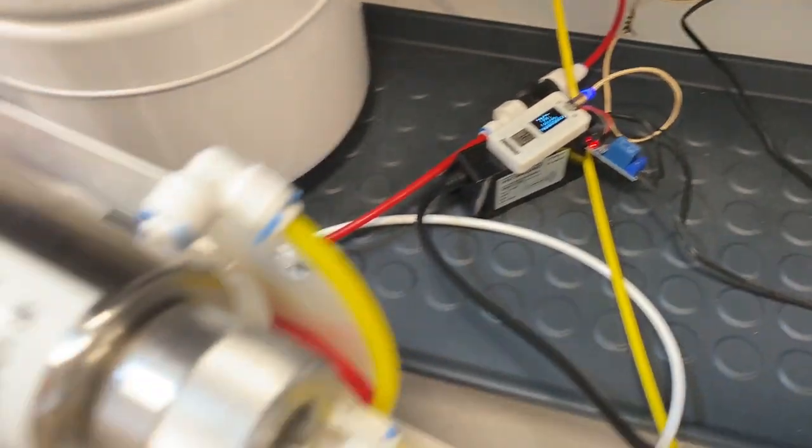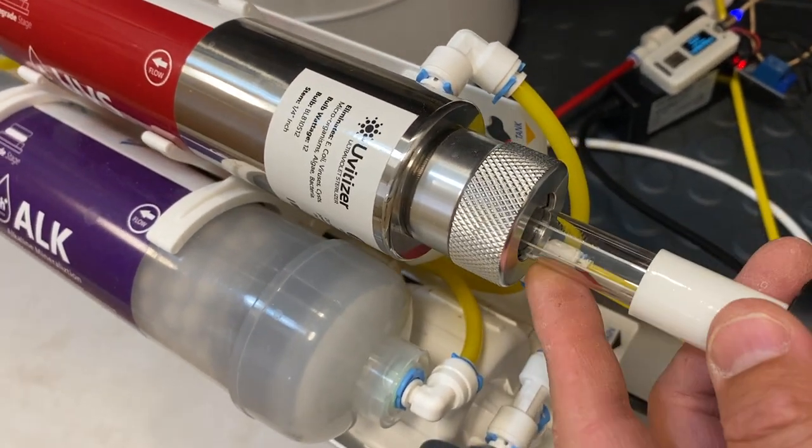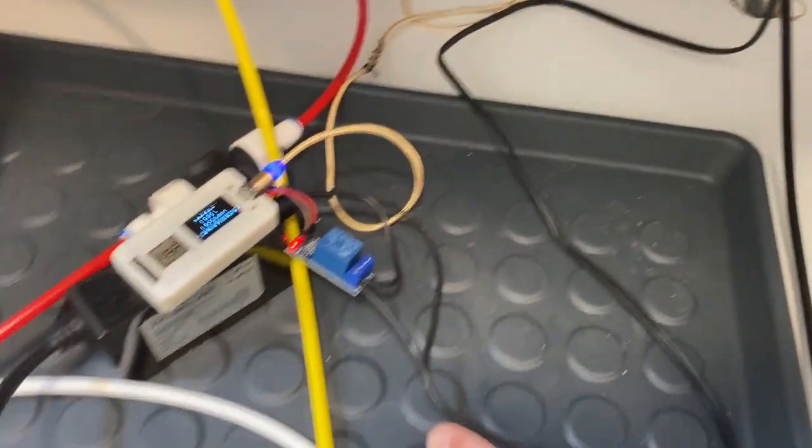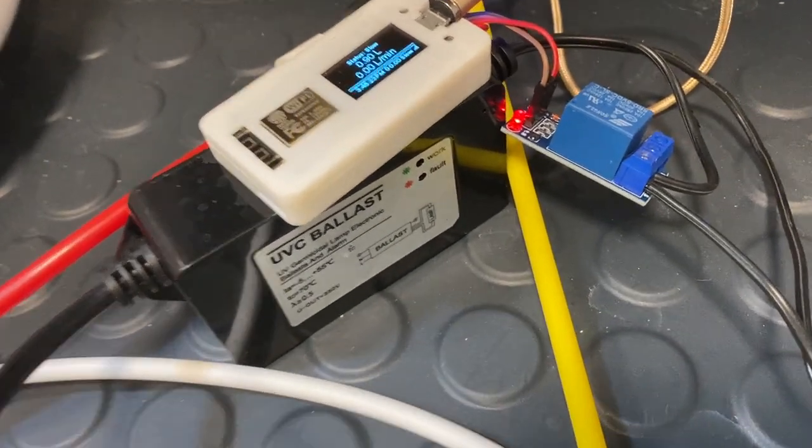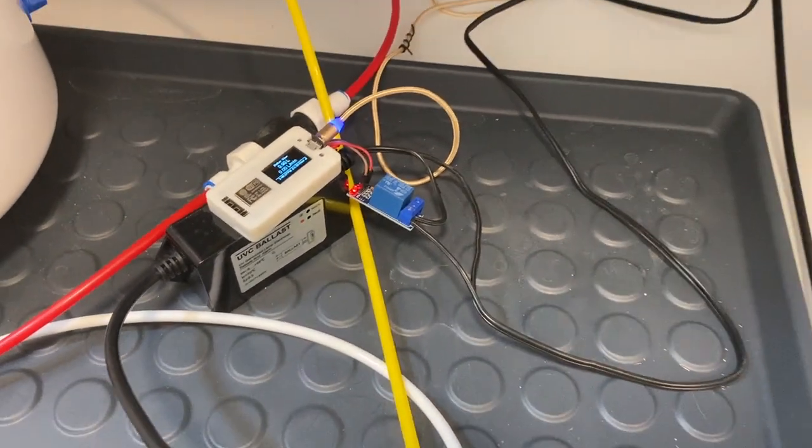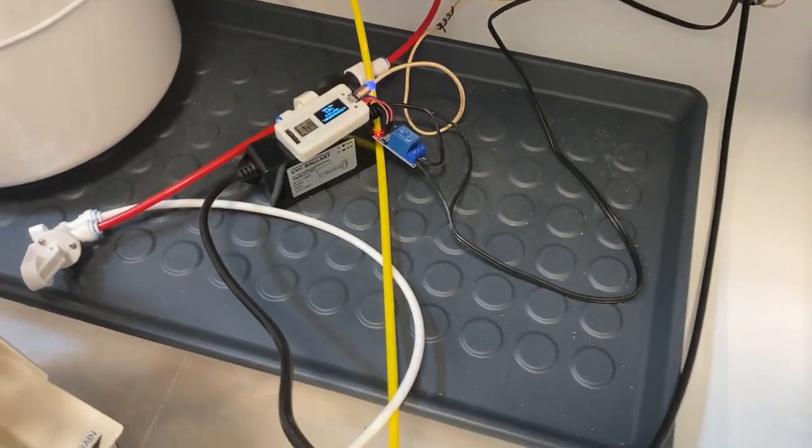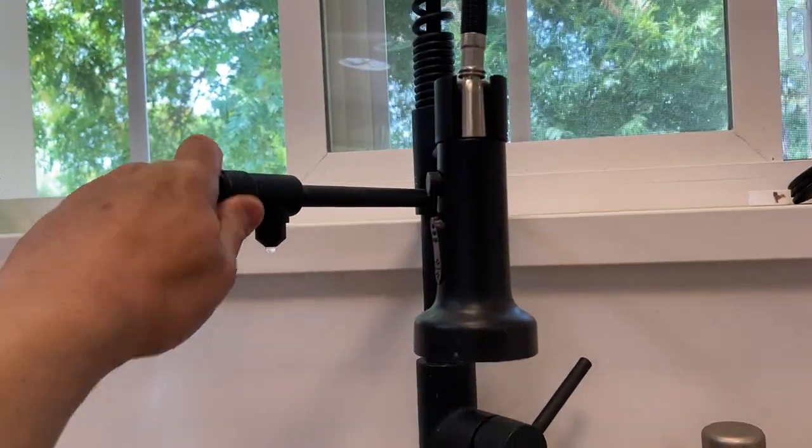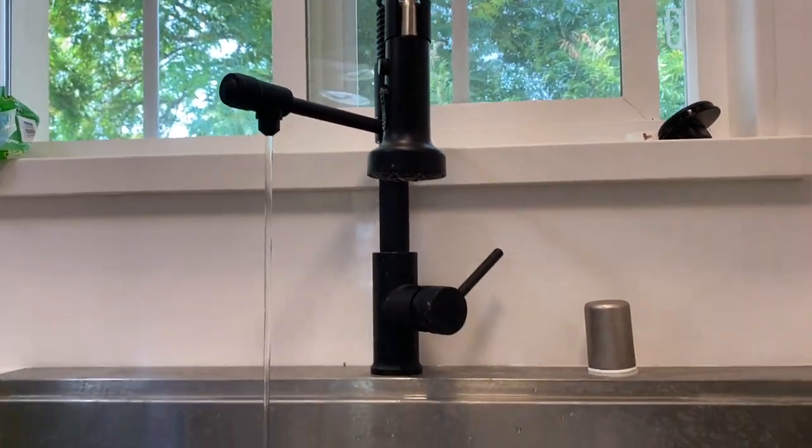So right now, it's off. I can show you, right now there's no UV light. And connect the power, the UV light adapter, power adapter. Now it's off. And right now there's no water flow. See the pressure is zero. But okay, let me open the water, the filter water.